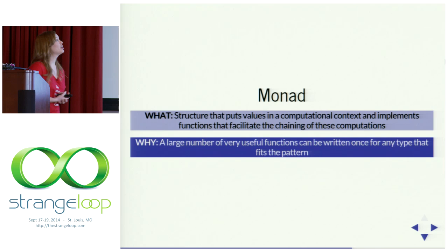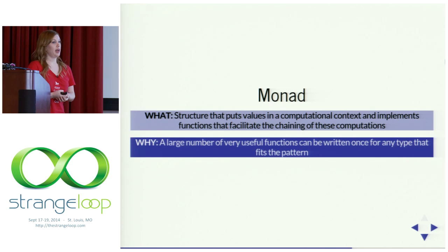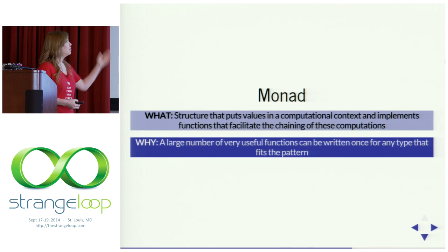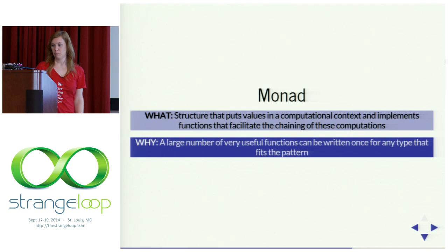Next up — the M word. Monads probably get a lot more attention than they really deserve. If you understood functor, this is really just a beefed-up functor — in fact, monads are also functors. We're again talking about a structure or computational context containing other values. In this case it implements two particular functions that facilitate the chaining of computations. The big idea is just that it's a useful pattern, and if we can abstract at this level, we can write code once for anything fitting this pattern — and there are a lot of things that fit the monad pattern.